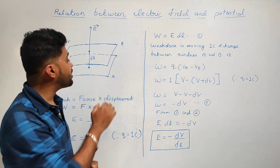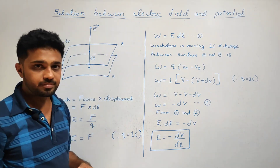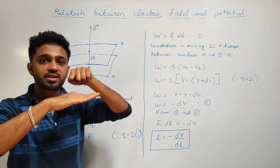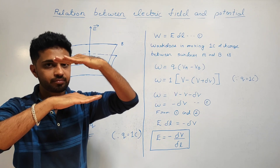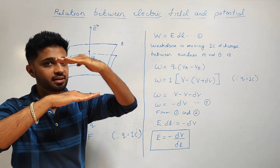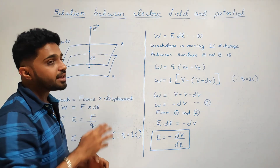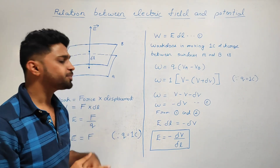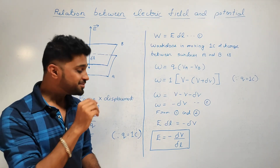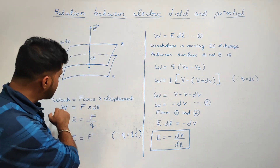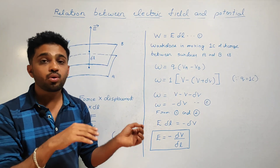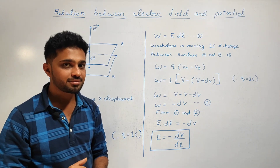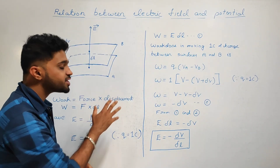The two equipotential surfaces A and B are separated by a perpendicular distance — that means delta L. This is the derivation. The equation work W is equal to force into displacement.